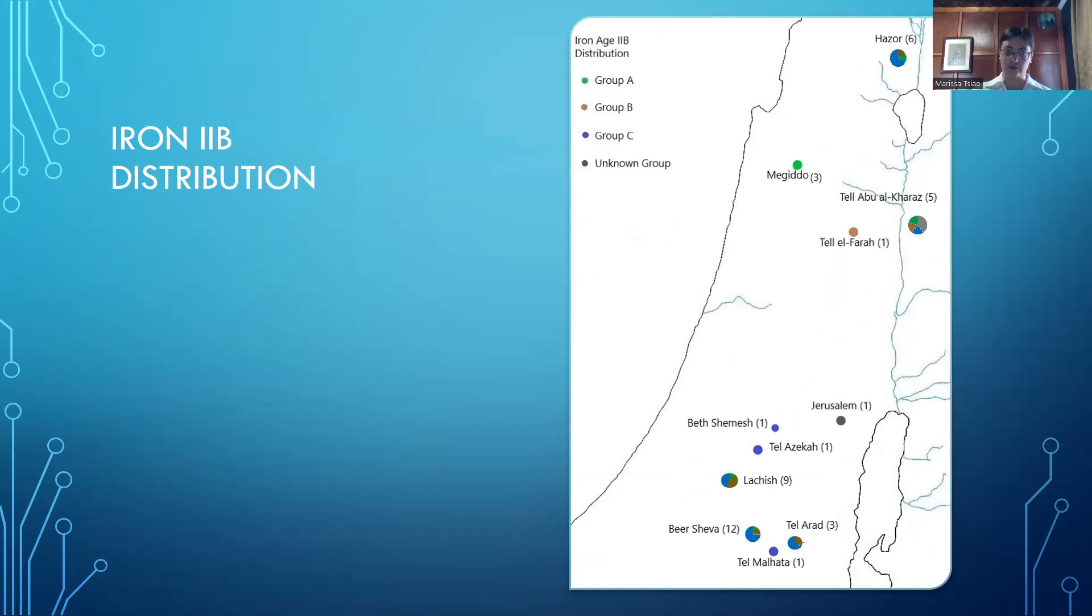Fibulae become more common in Judah, at sites housing administrative personnel, such as Tel Lachish level III and Tel Beersheva strata II and III. It is also during this time that the one-piece fibula ceases to exist or be produced in the Southern Levant at all, instead favoring the two-pieced version. The one-piece fibulae exists only in Cyprus and Greece from this point forward in the geometric period.